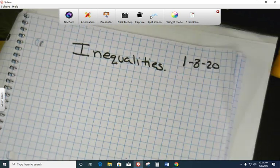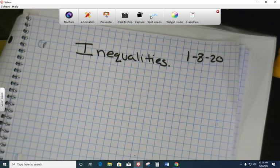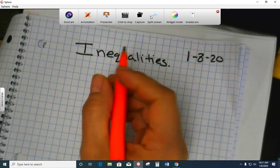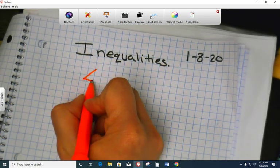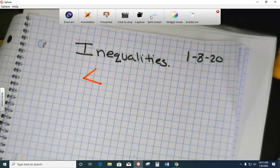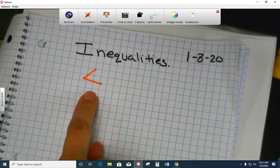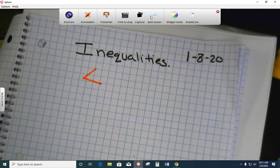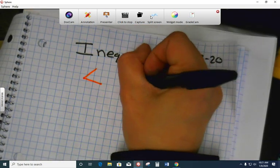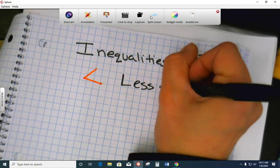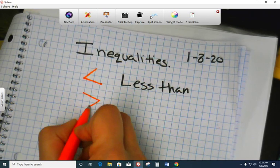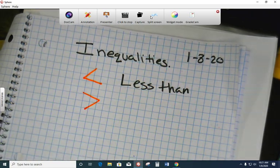Okay, now there are a couple of inequalities that you have already learned. For example, this inequality. Raise your hand if you can tell me what is the name of this inequality? This is called an inequality symbol, but it has a specific name. Sebastian? Less than. Good. We talked about these yesterday.